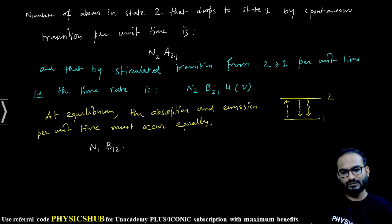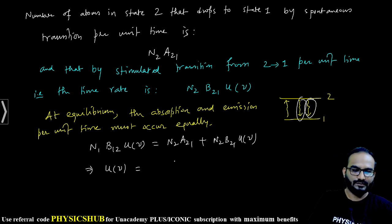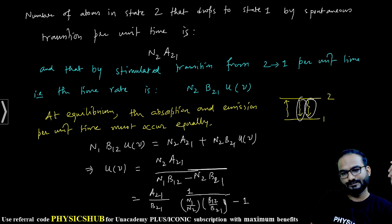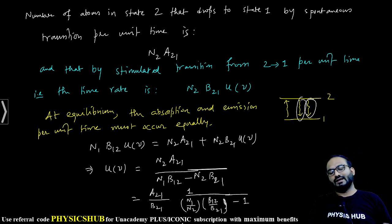So what we can write: if they are equal, then N1 B12 u(ν) equals N2 A21 plus N2 B21 u(ν). If you take u(ν) common, you get u(ν) times N1 B12 minus N2 B21 equals N2 A21. So we can take B21 common: u(ν) equals A21 divided by (N1/N2 times B12/B21 minus 1). This kind of expression we are getting.